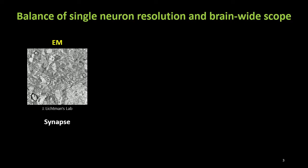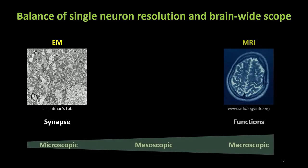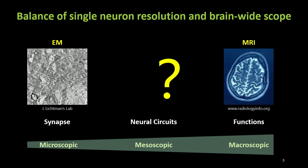We all know the structure of the brain is particularly complex. We can use the electron microscope to decipher the structure of the synapse, but it is very labor-intensive. The MRI can tell the regional responses with different brain function, but it cannot resolve the single neuron. Therefore, the brain study demands an approach at a mesoscopic level.